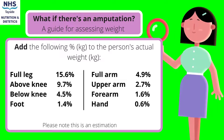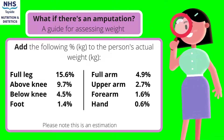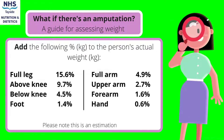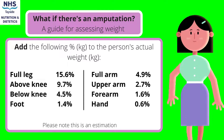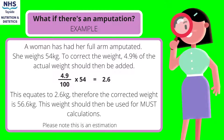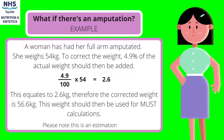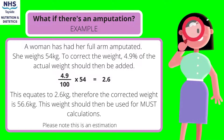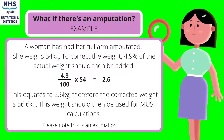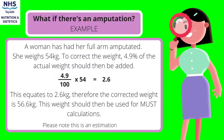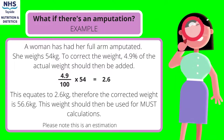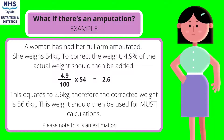In the case of an amputation, add the following percentage in kilograms to the patient's actual weight to calculate a more accurate BMI — select the appropriate percentage using the table. For example, a woman has had her full arm amputated and weighs 54 kilograms. To correct the weight, 4.9% of her actual weight should be added, equating to 2.6 kilograms. Therefore, the corrected weight is 56.6 kilograms, and this weight should then be used for MUST calculations.